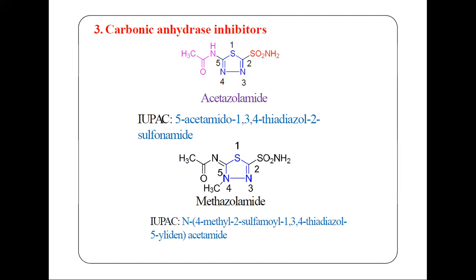If it is sulfur, then it is 'thia'; if it is nitrogen, then it is 'aza.' So we have: thia at position 1 (sulfur), aza at position 3 (nitrogen), and aza at position 4 (nitrogen). This gives us positions 1, 3, 4 — making it a thiadiazole ring.